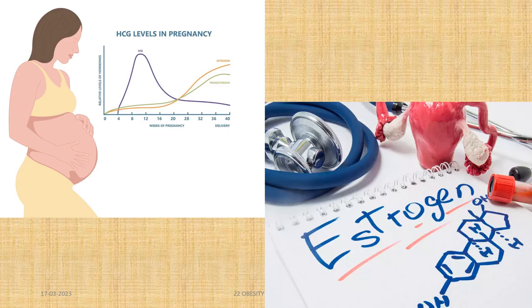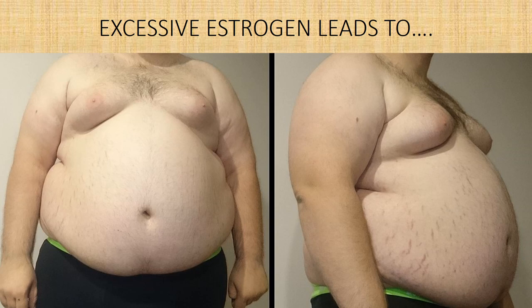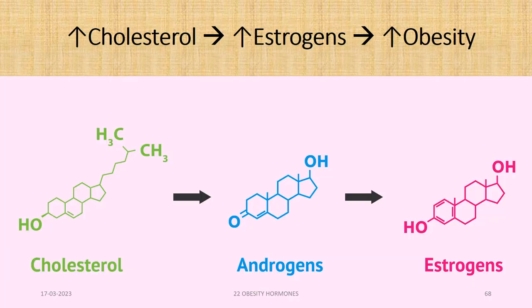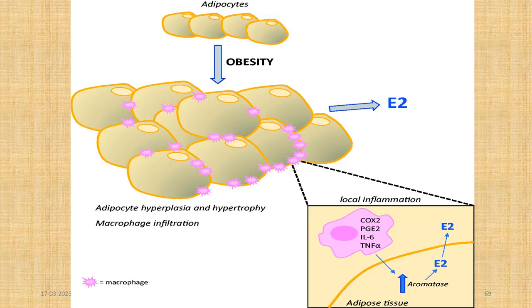Increased levels of estrogen make a woman's body fat and obese, ready for pregnancy. But excessive estrogen also leads to gross obesity, which creates thick and big breasts in men, as well as a twin pregnancy-like look of the abdomen. Estrogen is primarily synthesized from cholesterol, so increased cholesterol leads to increased estrogen and obesity. The fattened adipocytes then start secreting estrogen of their own, becoming the largest estrogen-secreting gland in the body — weighing 15 to 30 kilograms — making obesity and estrogen a vicious, unstoppable cycle.